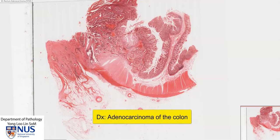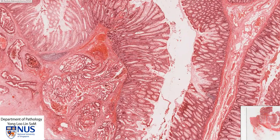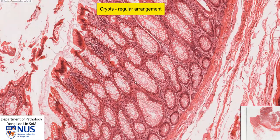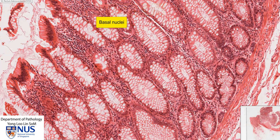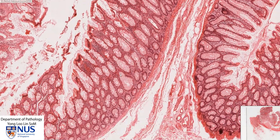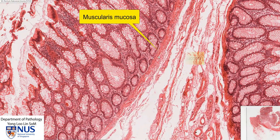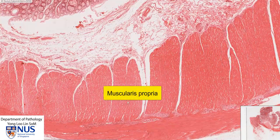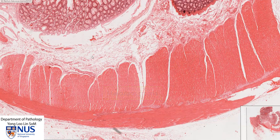The diagnosis here is adenocarcinoma of the colon. Let's first have a look at the normal colonic mucosa. We can see that there are very regularly arranged crypts, lined by cells with very basally located nuclei, and they have extremely prominent and abundant goblet cells. These goblet cells contain mucin. We can also see the muscularis mucosa with the submucosa and below this, the muscularis propria. Everything is very orderly here.